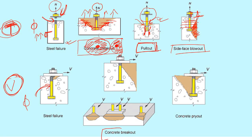The second shear failure is concrete breakout under shear. If sufficient reinforcement is not provided, once the shear force is transferred to the adjacent concrete, it will crack and the whole chunk of concrete will come out — forming a cone shape as it comes out.